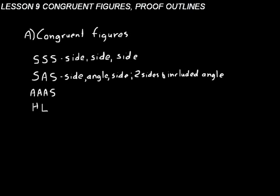Another postulate is SAS, or side, angle, side. If you have two triangles and you're looking at two sides and the included angle — that means the angle in between them — and those two sides and the included angle are all the same, then those two triangles are congruent.